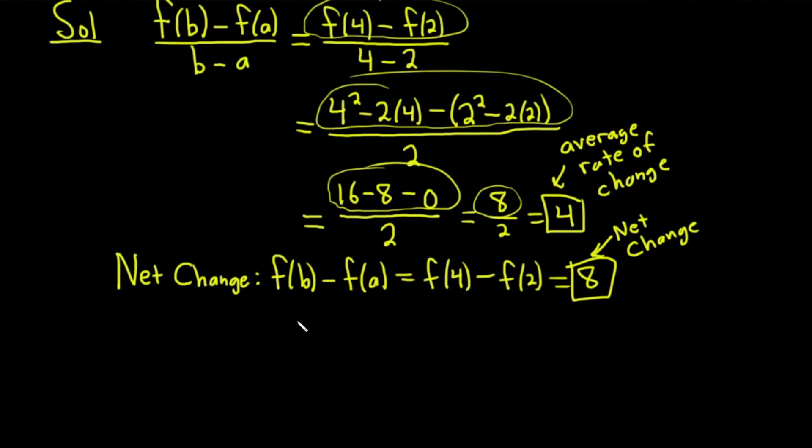If you have a position function, if you have S(T) and this tells you the position at time T of some object, maybe it's a bug crawling on a wall or maybe it's a ball being thrown in the air, the average rate of change of S is the average velocity. So that's one application.